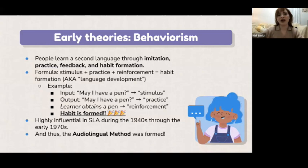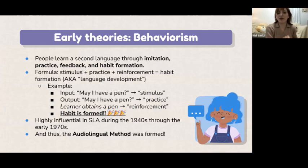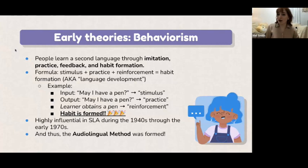Some early theories of second language acquisition include behaviorism. Behaviorists believe that people learn a second language through imitation, practice, feedback, and habit formation. There's almost like a formula: stimulus plus practice plus reinforcement builds habit formation, which causes language development. For example, your teacher says "repeat after me — may I have a pen?" That's the stimulus. You produce the output: "May I have a pen?" That's the practice. Then the teacher gives you the pen — that's the reinforcement — and habit is formed.